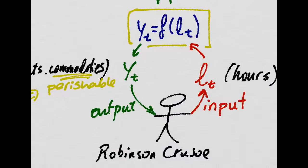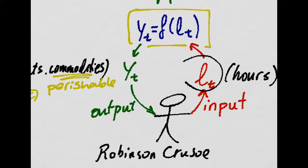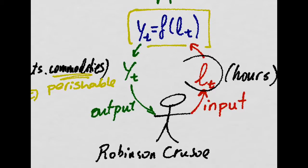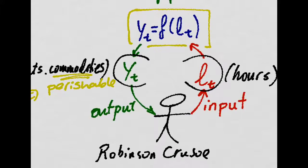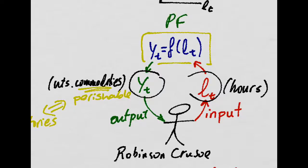Robinson Crusoe is the perfect case because he uses his own labor as an input to get some output using this production function. yt is equal to the function of his own labor, and that would be his output.